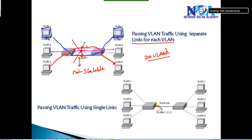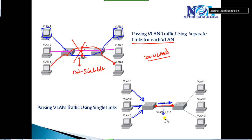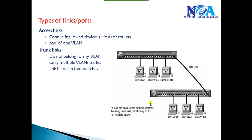Instead of separate links, what we can do is use only one common link which can carry all the VLAN traffic. We can ensure that VLAN one traffic, VLAN two traffic, and VLAN three traffic all go on the same link without interfering with each other. We are going to see how this is possible — how multiple VLAN traffic can travel on the same link without conflicting.